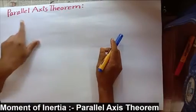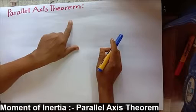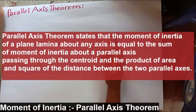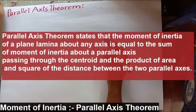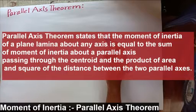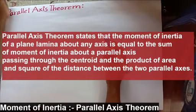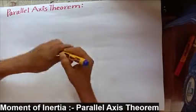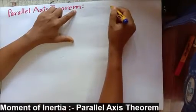The next topic is the Parallel Axis Theorem. The Parallel Axis Theorem states that the moment of inertia of a plane lamina about any axis is equal to the sum of the moment of inertia about the parallel axis passing through the centroid and the product of area and the square of the distance between the two parallel axes.